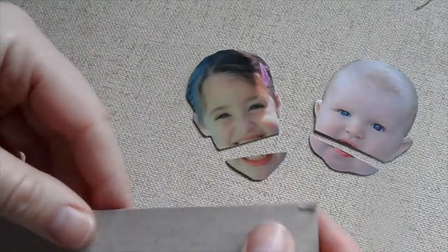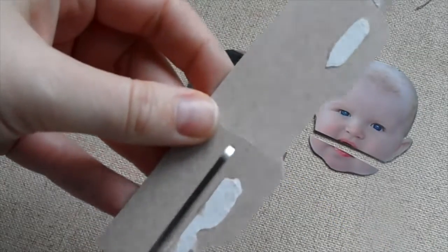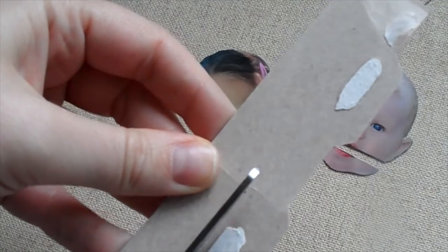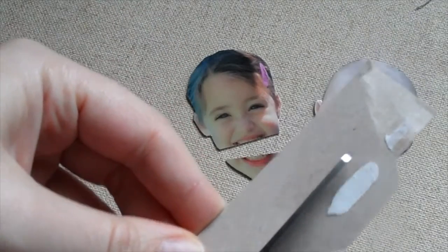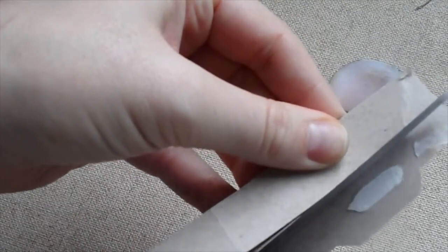Now again, just using scraps of cracker or cereal boxes, you're going to cut out a piece that's going to fit inside the mouths and essentially inside of the clothespin.